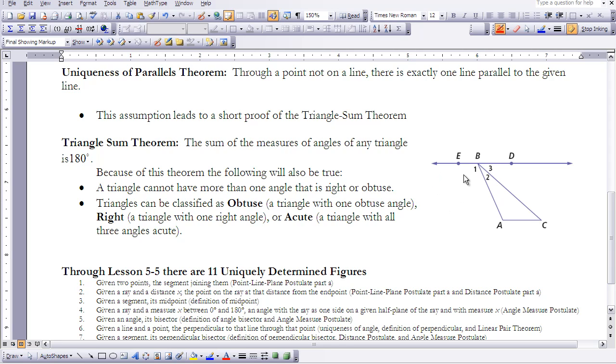But let's use the uniqueness of parallels theorem and take a look at this theorem and actually prove it. So if we take our triangle ABC and we take vertex B as a point, we want to make a line parallel to AC. So the uniqueness of parallels theorem says there's only one possibility, so that would be line ED. Now, since these two lines are parallel to each other, we can use a couple of theorems that we know.